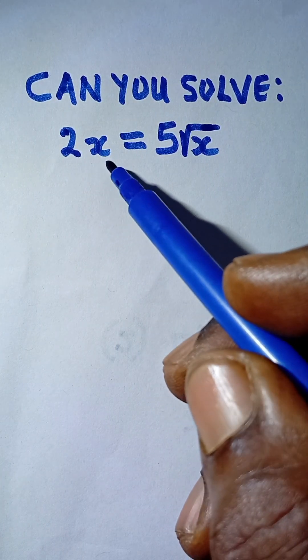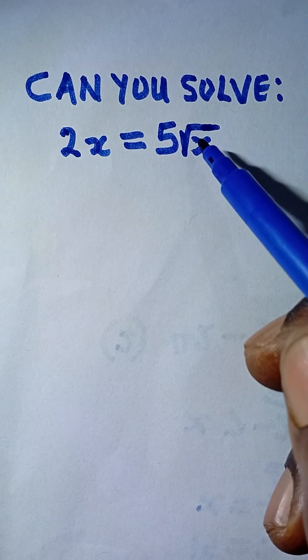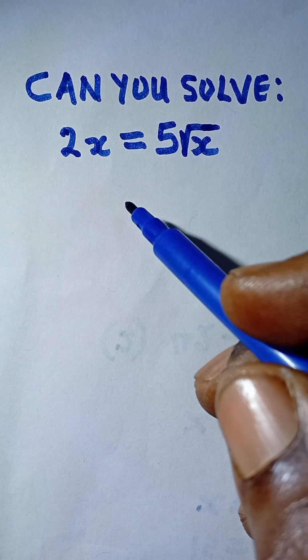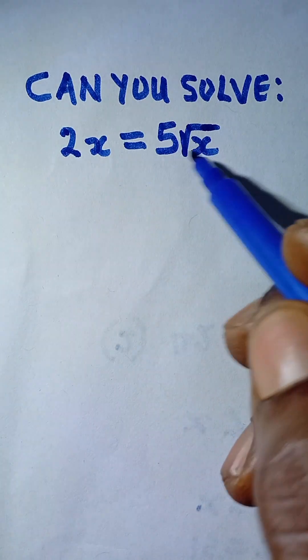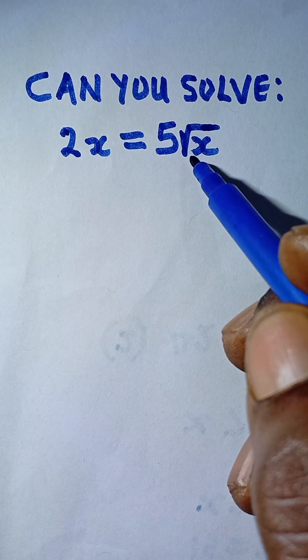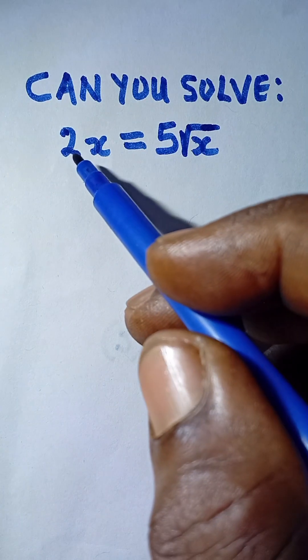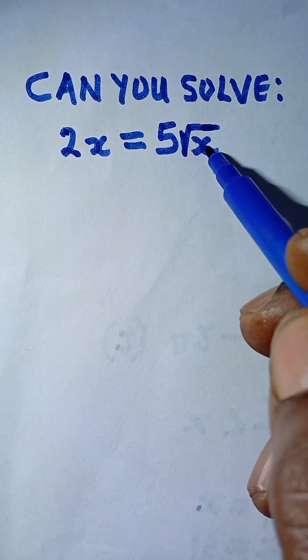To solve 2x equals 5 root x, the first thing to do is to square both sides. To square both sides means we square every term we can see here.